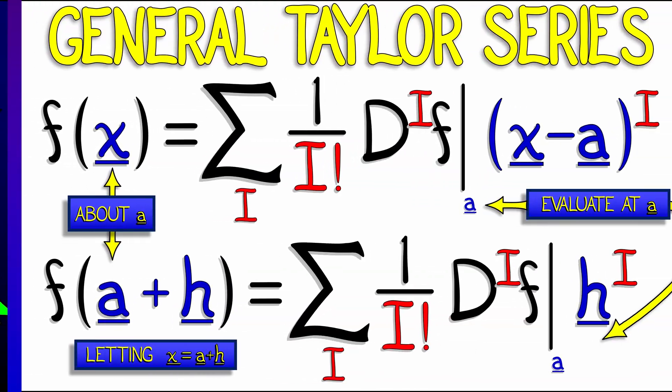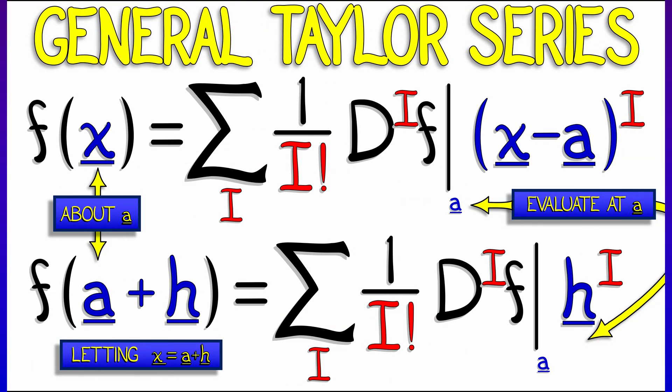But what do you do if you want to Taylor expand about some other input, let's say a? Well, in this case, you could simply use the same formula, but instead of a polynomial in x, you have a polynomial in the quantity x minus a. Or if you prefer, you can use a local variable h equal to x minus a, do a little substitution, and then you get the formula that appears at the bottom,